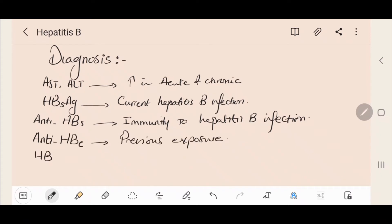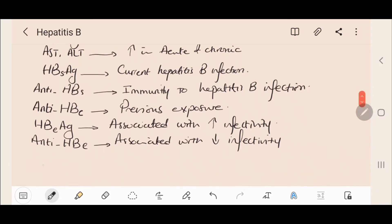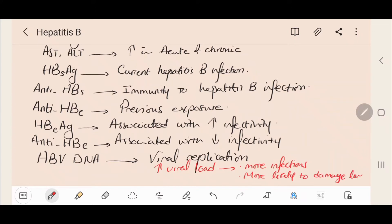The Hepatitis B core antibody (anti-HBc) means that there has been previous exposure to Hepatitis B. The Hepatitis B envelope antigen (HBeAg) is associated with higher infectivity while the Hepatitis B envelope antibody (anti-HBe) is associated with lower infectivity. The Hepatitis B DNA, which is the viral load, means viral replication.